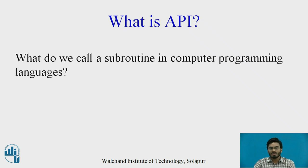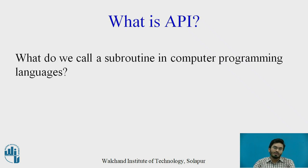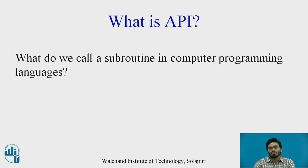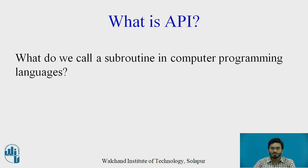Any piece of code or any operation — like addition, subtraction, multiplication, division, or any arithmetic operation — which you are going to frequently use again and again, such kinds of codes are defined as functions or methods in any programming language and we simply call them subroutines. Later on, whenever we need the task to be performed, we simply call them in our main routine. Similar to this, APIs act as a subroutine which can be called by the browser of a client who is trying to access some sort of content on a web browser.